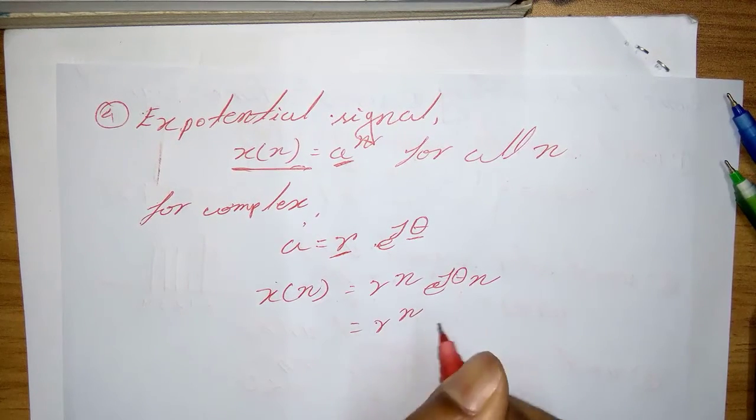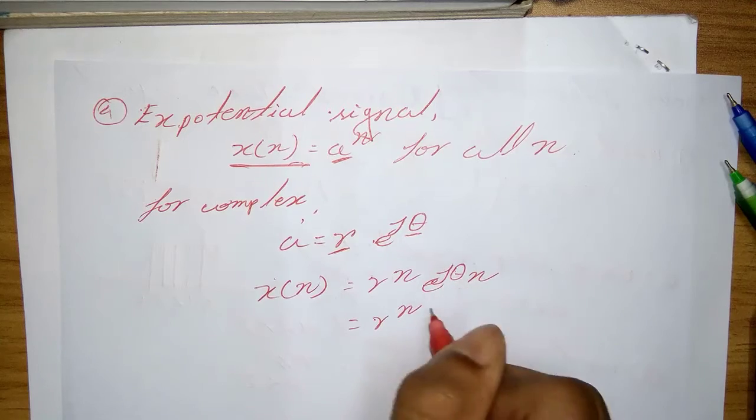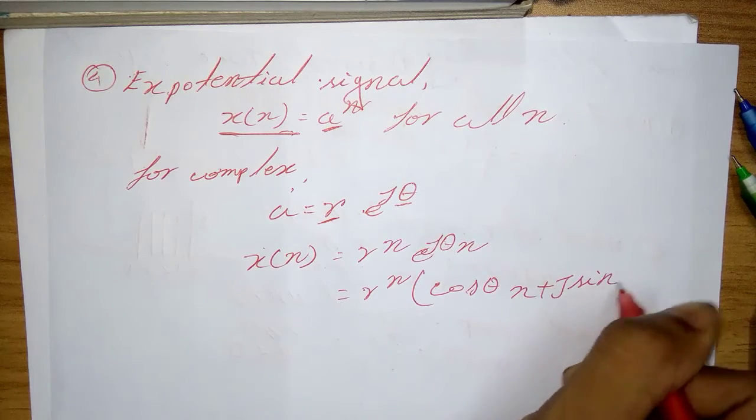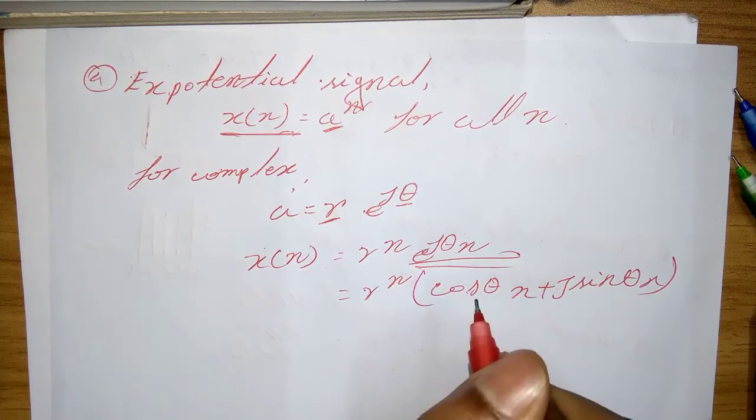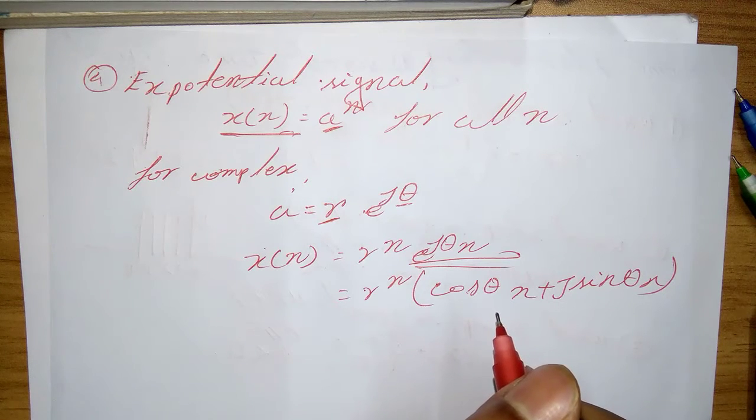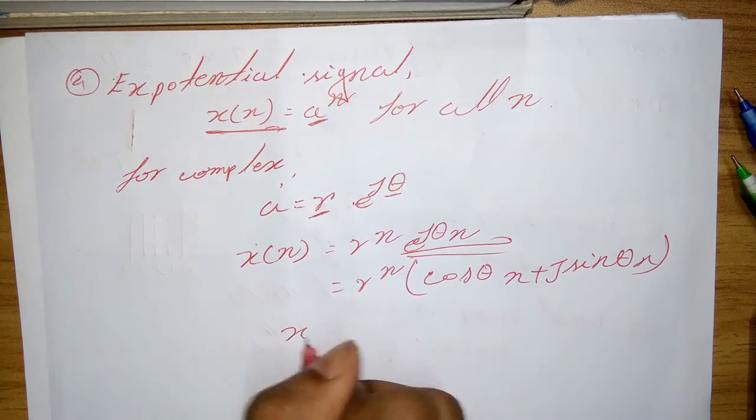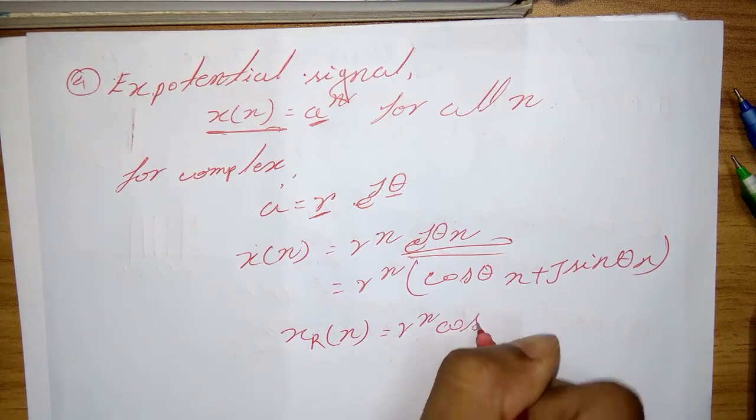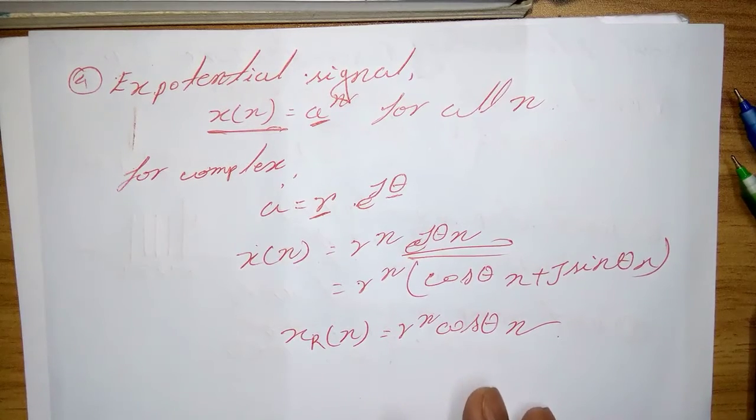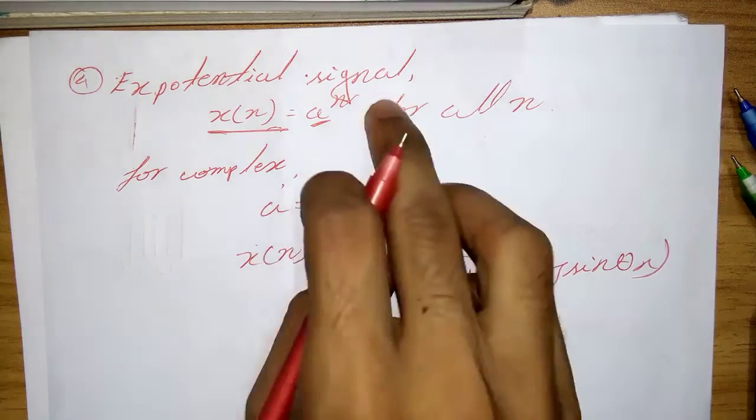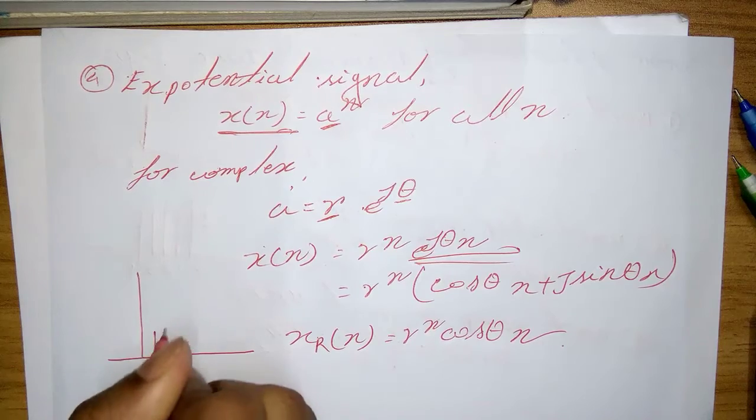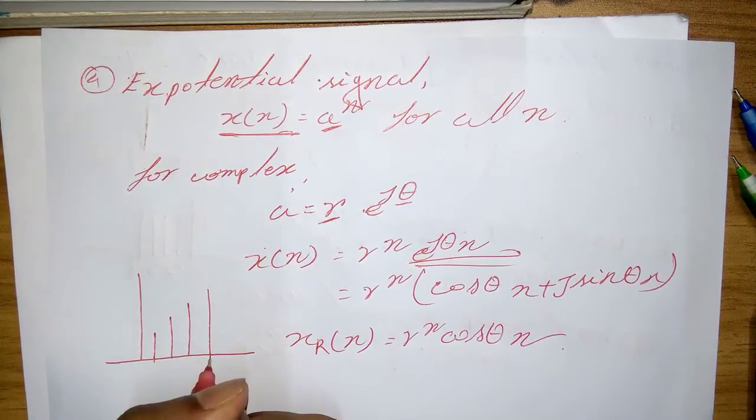For that, r n and here e to the power j theta n is written as cos theta n plus j sin theta n. We know this formula. And since x of n is now complex valued, it can be represented graphically by plotting x of r n equal r to the power n cos theta n.